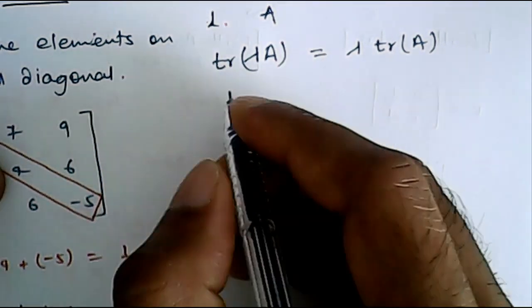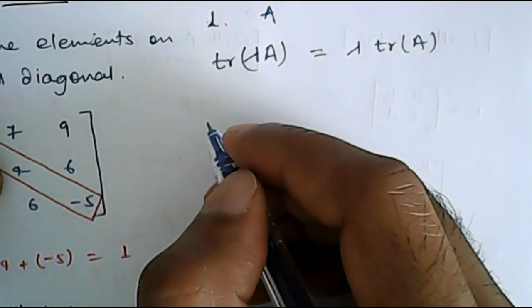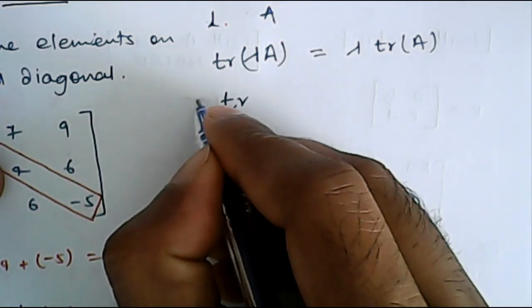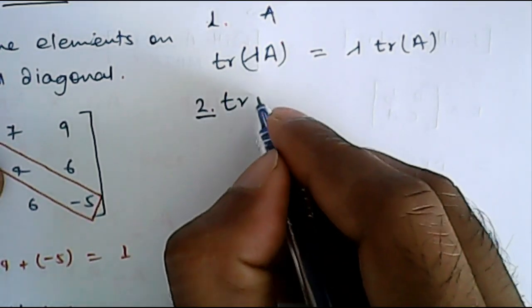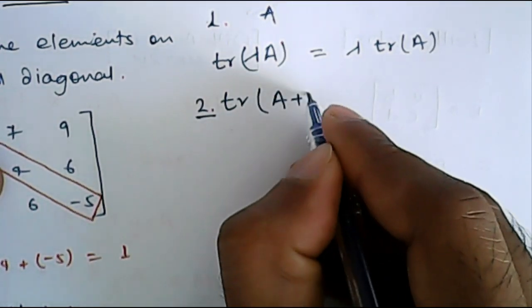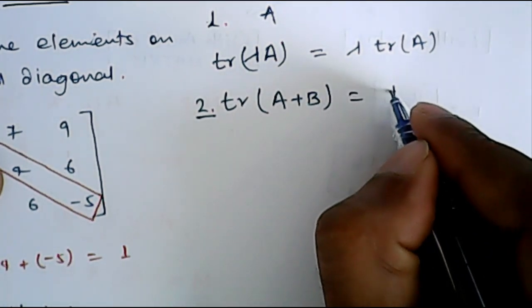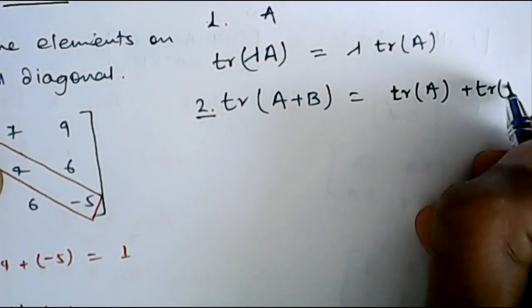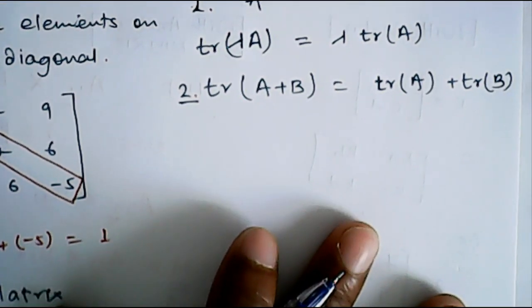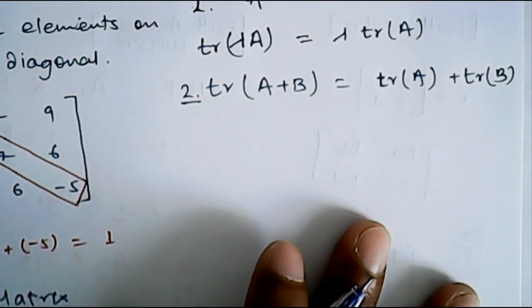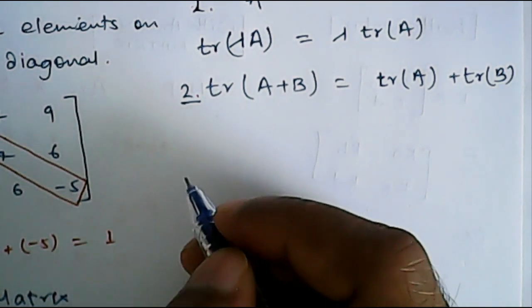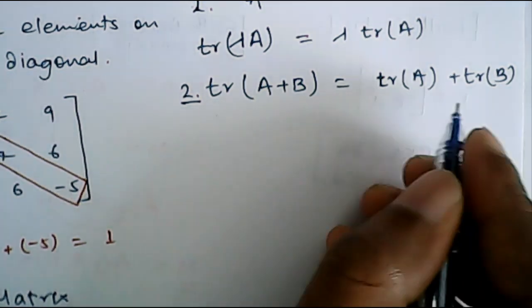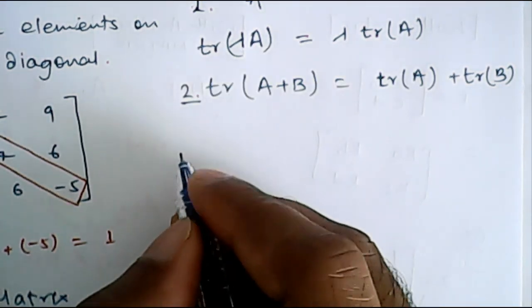Now, the next one is the distribution. This is second property. The trace of A plus B is equal to trace of A plus trace of B. These are all obvious properties. There is no exception or difficulty to remember. So, you can very easily remember these things.